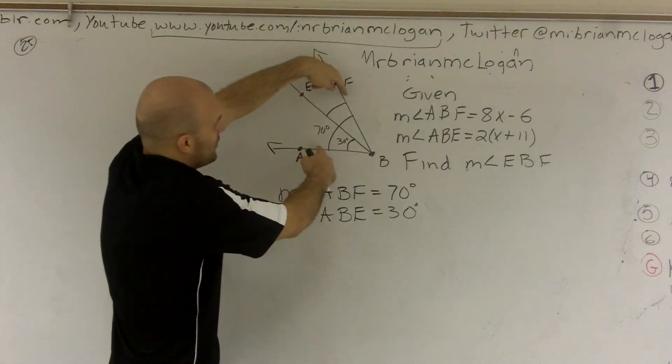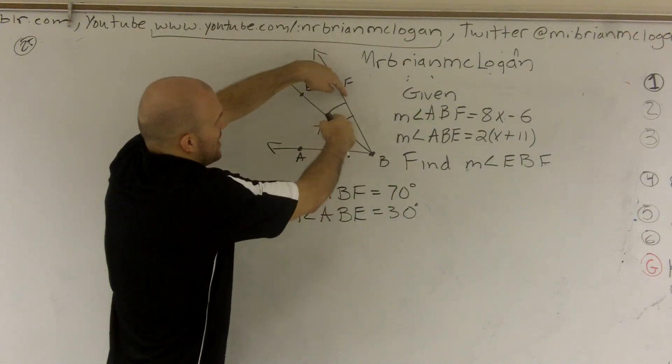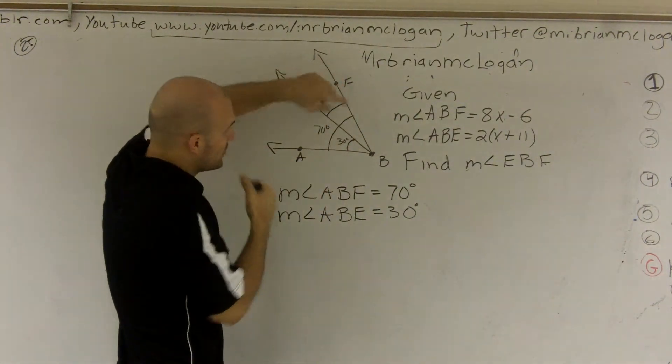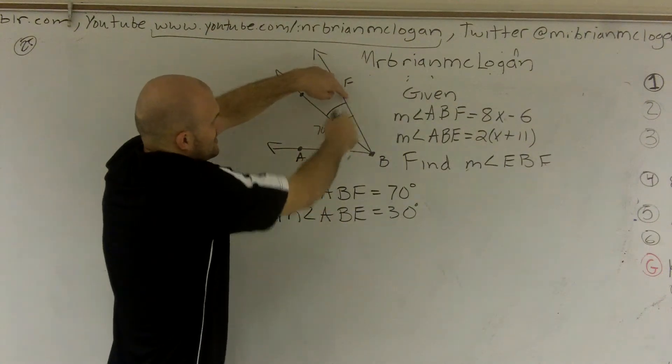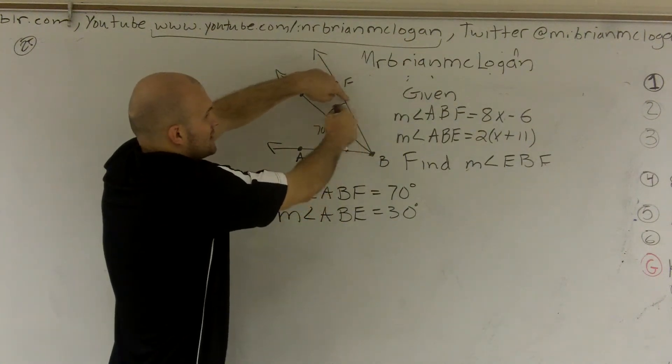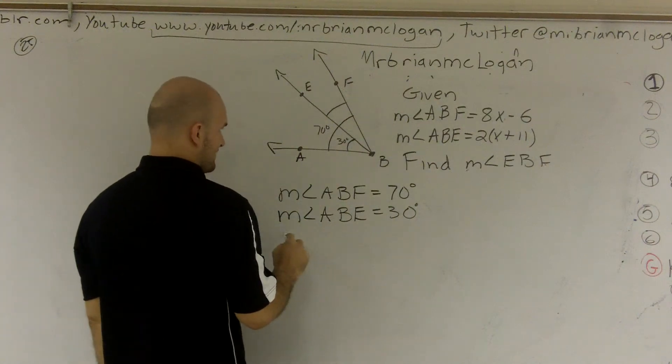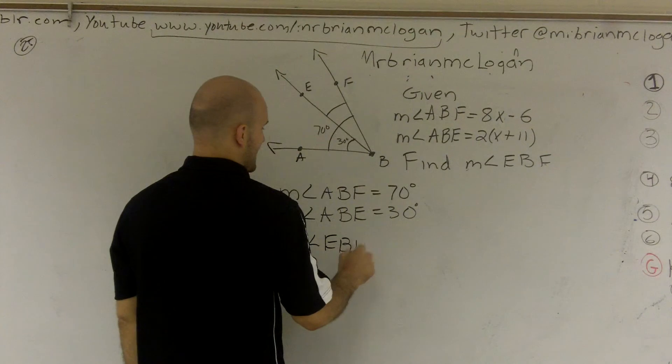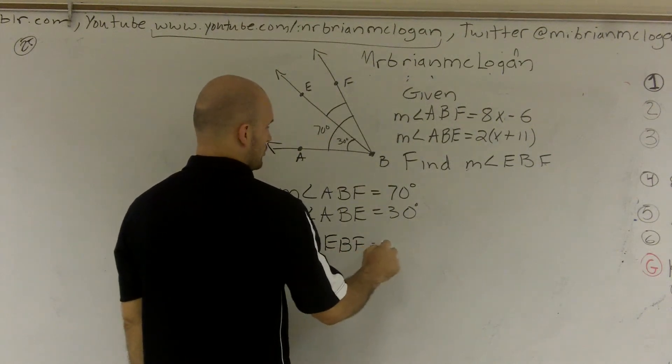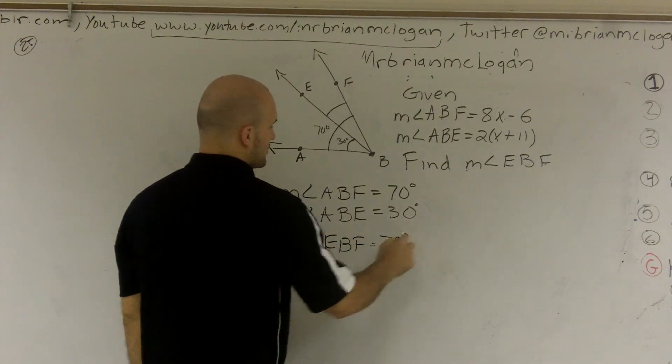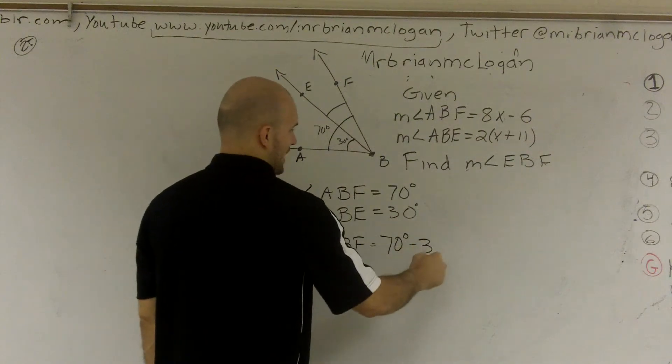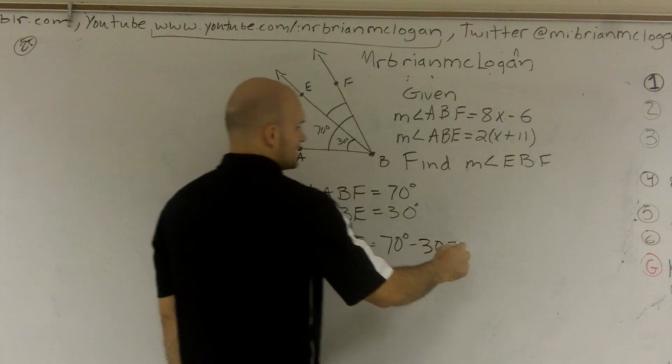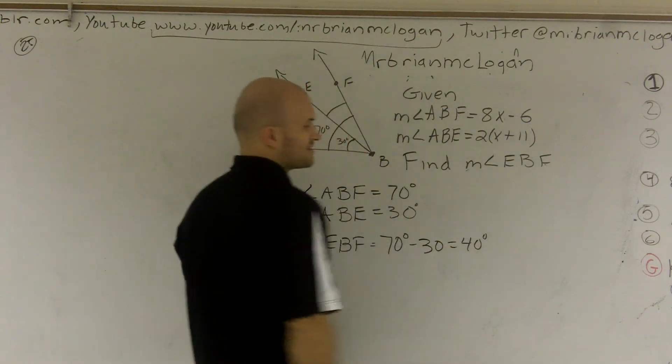Given this, here I have the whole. If I subtract out this, I'm left with this, right? So the whole angle is 70. Minus 30 will leave me the remainder. So all I'm going to do is to find the measure of angle EBF, I need to take the whole angle, which is 70 degrees, subtract the other part to get 40 degrees. Does that make sense?